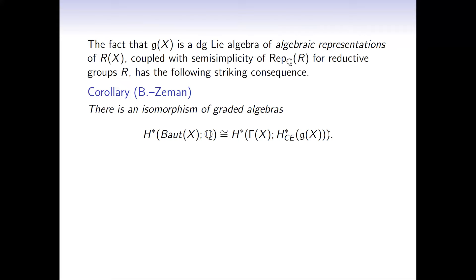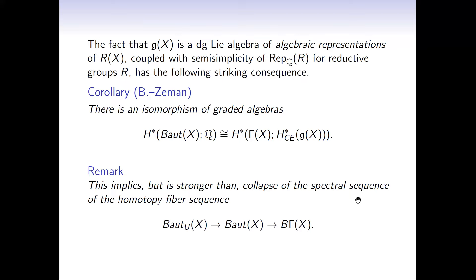Even more is true. In characteristic zero, reductive means linearly reductive: the category of algebraic representations is semisimple—all representations split as direct sums of simple modules. The fact that we get a reductive group is wonderful because all representations in the DG Lie algebra now split. With some extra work, this has a striking consequence: you get an isomorphism of graded algebras, and the cohomology ring of this classifying space is isomorphic to the cohomology of gamma_X with coefficients in the Chevalley-Eilenberg cohomology of the DG Lie algebra. This implies collapse of the spectral sequence, but is actually stronger than that.